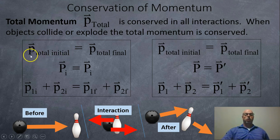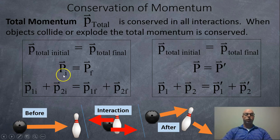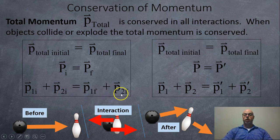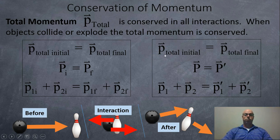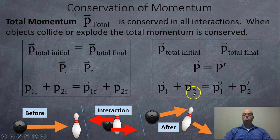One way to write it is like this: your total initial momentum is equal to your total final momentum, or your initial momentum P_I is equal to your final momentum P_F. If you have two objects, the first object's initial plus the second object's initial equals the first object's final plus the second object's final. If you find this subscripting difficult, you can use prime notation instead: no prime means initial, and a prime symbol means after.